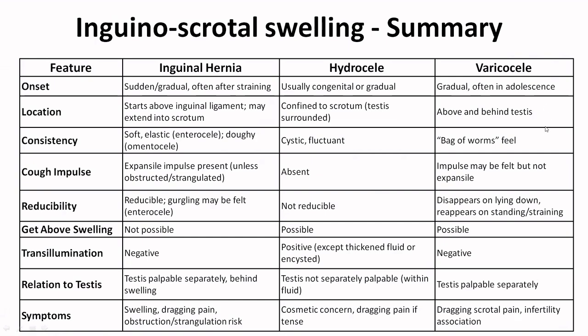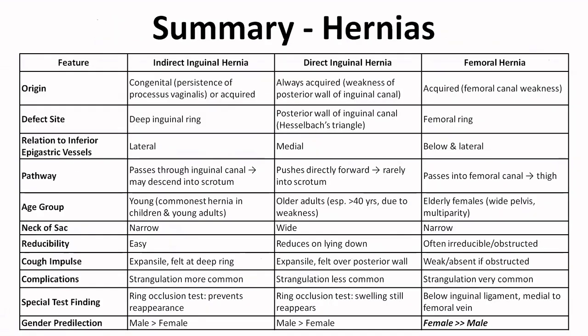Varicocele can often present as a cause for infertility or dragging scrotal pain. Important points in varicocele: it usually occurs in young adults and a bag of worms feel is classical. It disappears on lying down but reappears on standing. For hydrocele, it is predominantly cystic and fluctuant, and the cough impulse is absent. These are the important points to differentiate these three common etiologies.